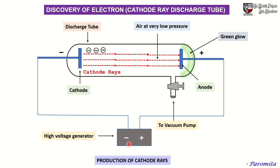These metal plates are connected to a high voltage source. The electrode connected to the negative terminal of the source is termed as the cathode, and the electrode connected to the positive terminal of the source is termed as the anode. There is also a side tube which can be connected to an exhaust pump or a vacuum pump used for lowering the pressure of the gas inside the discharge tube.